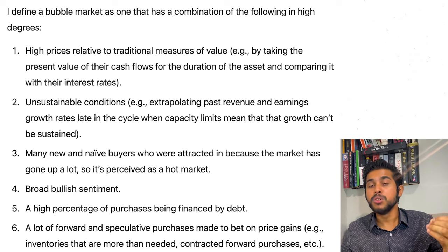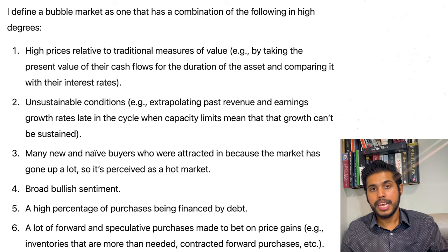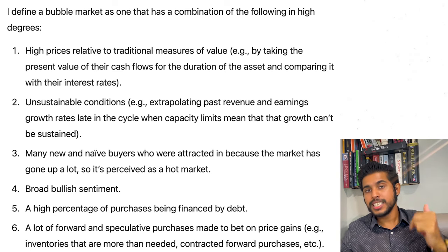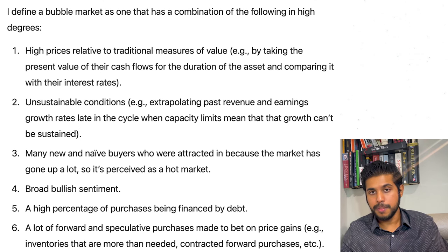Everyone has a different definition of what constitutes a bubble. According to Ray Dalio there are six items that we need to look at, and a bubble is when a combination of these six are happening at the same time.